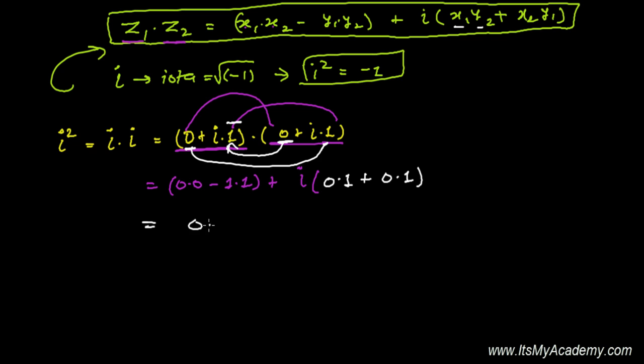Further, it's going to be 0 minus 1 plus i times (0 times 1 that is 0 plus 0). So it's going to be minus 1 plus i times 0, which equals minus 1. So here we see that i squared equals minus 1.